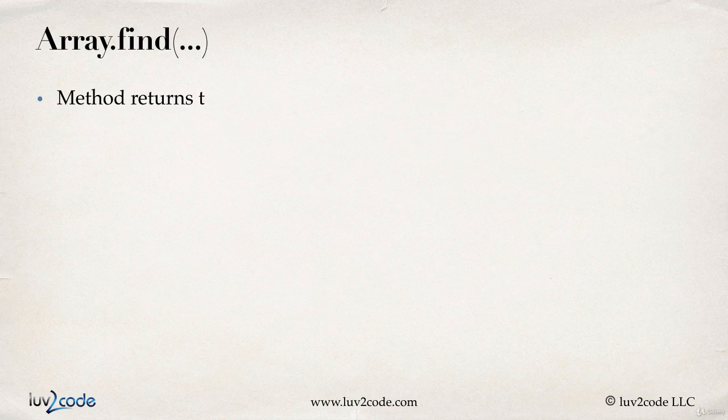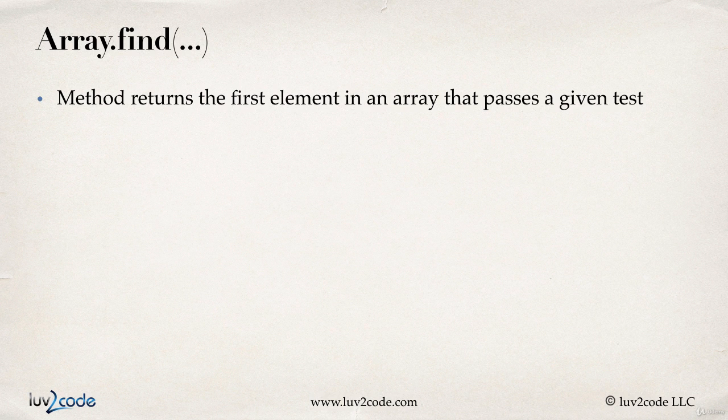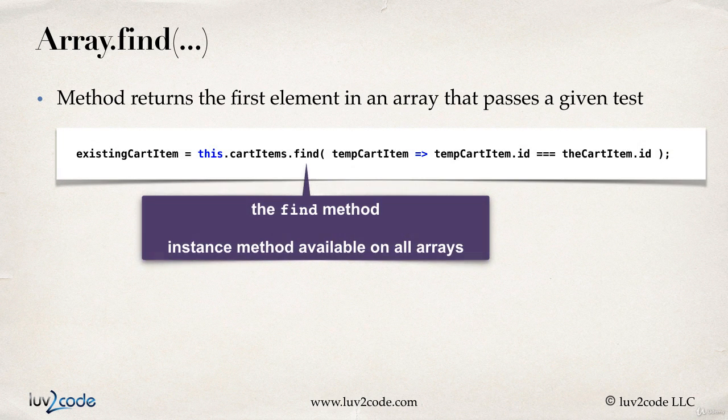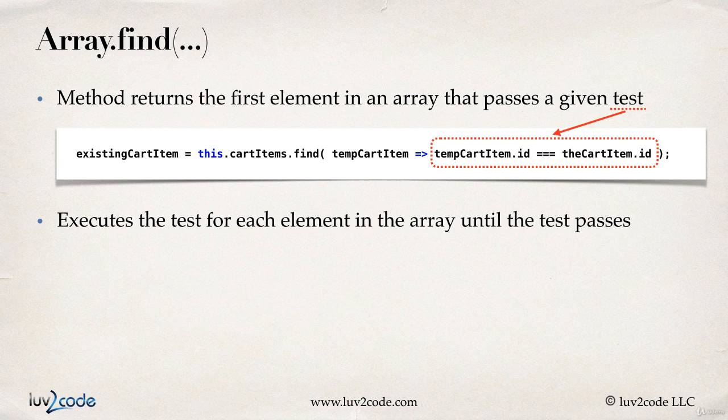We'll make use of the find method. This method returns the first element in an array that passes the given test. The find method is an instance method that's available on all arrays. Basically it'll loop through the array and it'll check a given test. The test that we're using here is we're trying to see if tempCartItem.id equals the cartItem.id. It'll execute the test for each element in the array until the test passes.